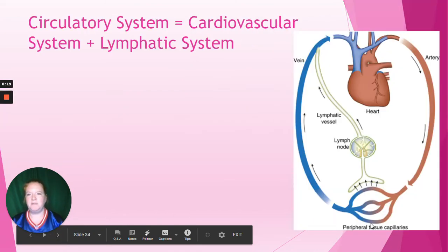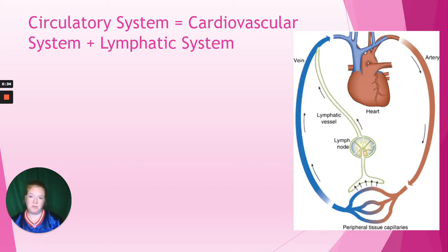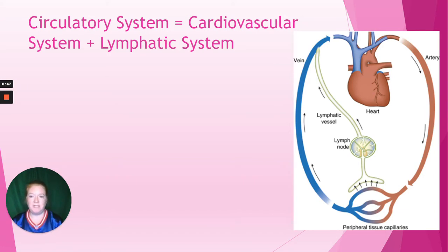First, we're going to talk about the circulatory system. Some people use it interchangeably with the cardiovascular system, but in reality the circulatory system has two parts: the cardiovascular system and the lymphatic system. The lymphatic system has its own separate system of vessels, but does interconnect with the cardiovascular system in order for those fluids to cycle back. So it's actually two parts to the circulatory system.